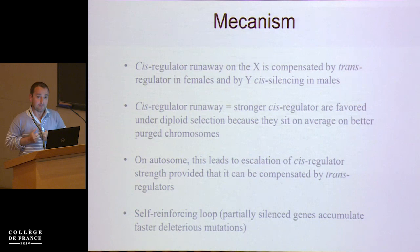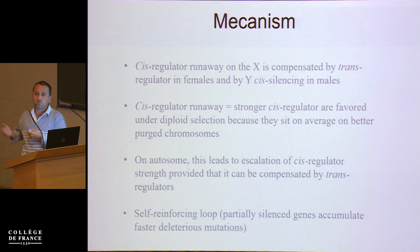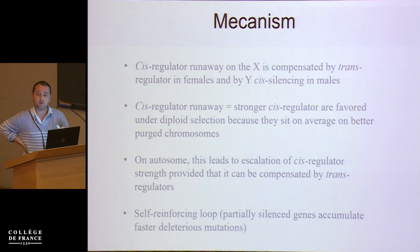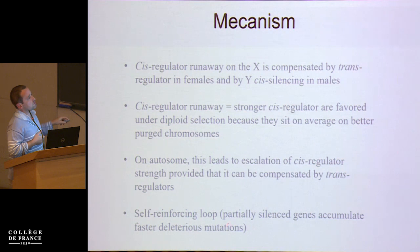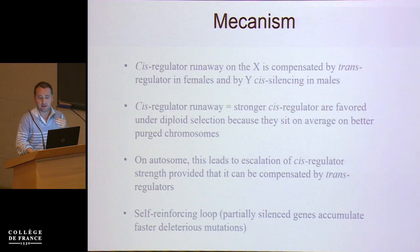The mechanism here is that cis regulator runaway on the X is compensated by trans regulation in females and by cis silencing in males. What I mean by cis regulator runaway is that when you've got a stronger cis regulator — and this is true also on autosomes, as we've shown in other models — under diploid selection a stronger cis regulator is always favored, because on average it sits on a chromosome that is better purged of deleterious mutations, since the gene it controls will be more exposed to selection. On autosomes this process leads to escalation of cis regulator strength, provided it can be compensated by trans effects. On sex chromosomes it just leads to Y degeneration. It's of course a self-reinforcing loop, because when a gene is partially silenced and starts to accumulate deleterious mutations, it becomes even easier to fix further mutations later on because they are now partially hidden from selection.